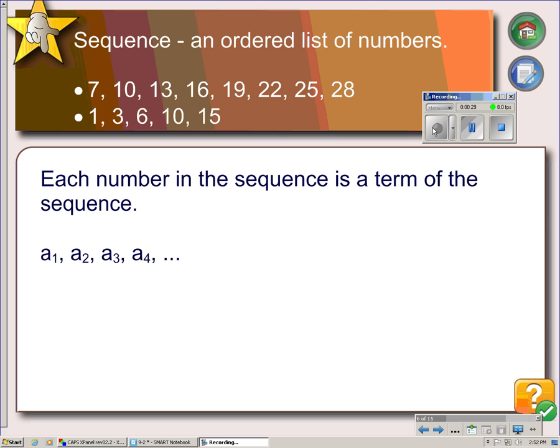First of all, what is a sequence? A sequence is an ordered list of numbers. So I have two sequences listed here. What makes them sequences is that they have order to them. Each of them has a different pattern in the sequence, but they each have a particular order that the numbers go in. That's what makes them a sequence.